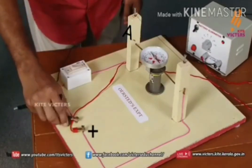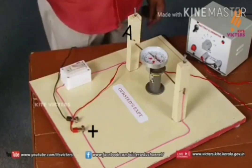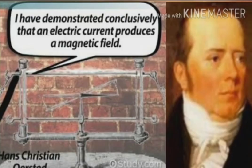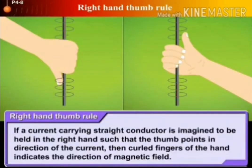From this experiment, we can understand that a magnetic field is developed around a current-carrying conductor. The magnetic needle is deflected as a result of the mutual action of this magnetic field and that around the magnetic needle. Hence, Christian Ørsted is the scientist who realized for the first time the unbreakable relation between electricity and magnetism. A magnetic field is developed around a current-carrying conductor.